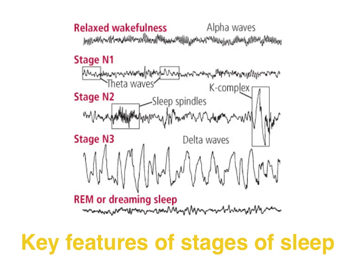Other features of sleep indicated by EEGs: during stage 2 of non-REM sleep, we get sleep spindles, which are high-frequency, low-amplitude brain waves, and also K-complexes, which are single bursts of high-amplitude brain waves caused by an external sound that doesn't wake the person up but the brain registers, or perhaps some type of muscle twitch.